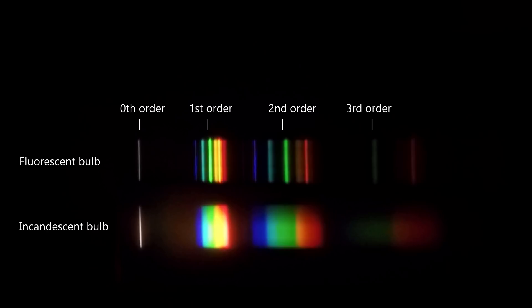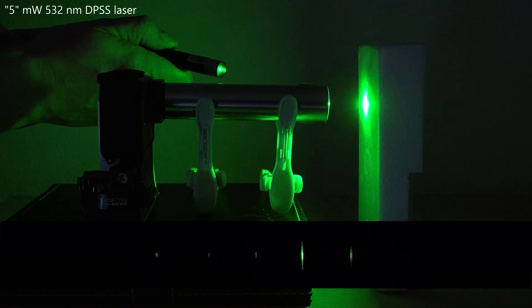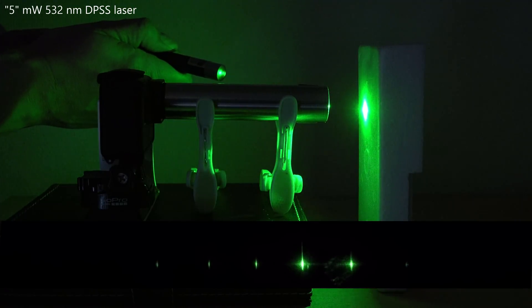Just for reference here's the spectrum from a green laser pointer. Not really a spectrum since this is monochromatic light. It's only green.